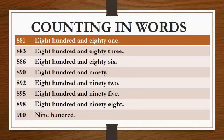881, and you have to write this number in words. You have to check the spelling in the book. Now let's start. 881: E-I-G-H-T, eight, H-U-N-D-R-E-D, hundred, and 81, that is 81, E-I-G-H-T-Y, eighty, O-N-E, one.